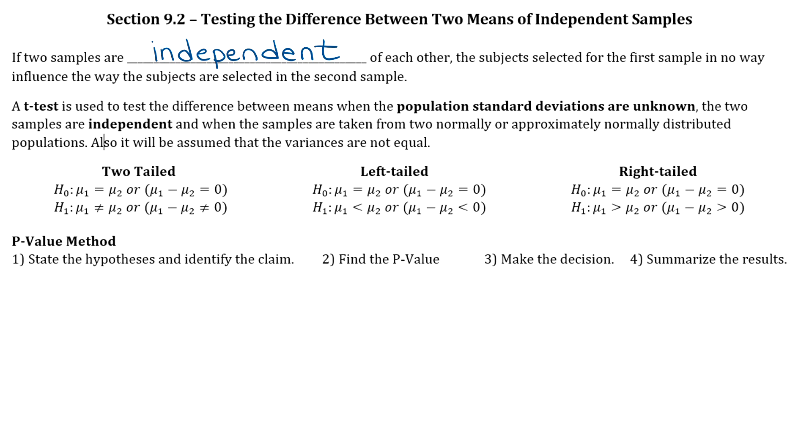Okay, so what does independent mean? Well, if two samples are independent of each other, that means that the subject selected for the first sample in no way influenced the way the subjects are selected in the second sample. So basically, independent just means that you have two random samples and they're being picked from separate populations. So they really don't affect each other at all.